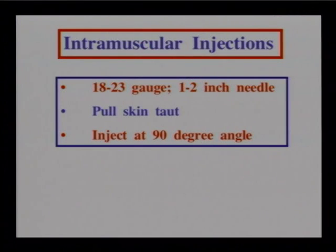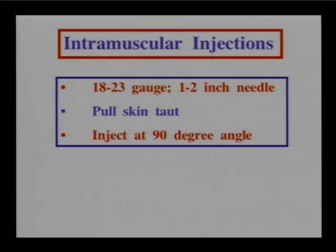Now let's look at giving particular types of medications. For intramuscular drugs, there's a wide range of gauge needles. Remember, the bigger the number, the smaller the needle. IM needles range from 18 to 23 gauge and are usually one to two inches long. You pull the skin taut and inject the needle at a 90-degree angle.